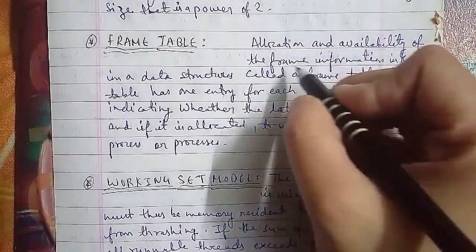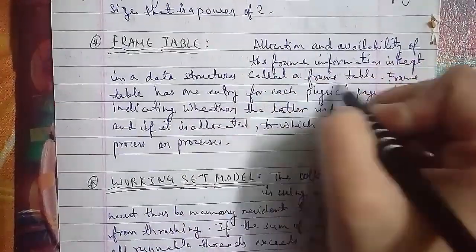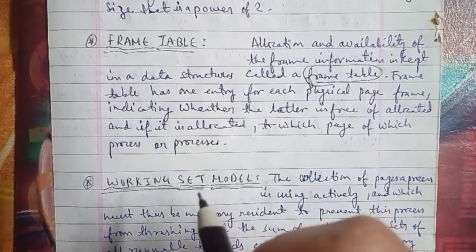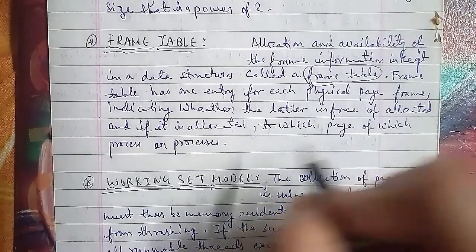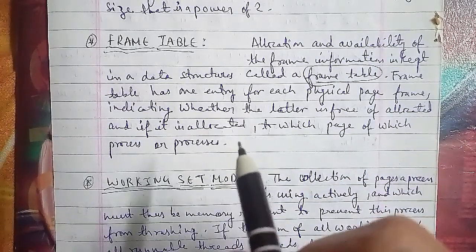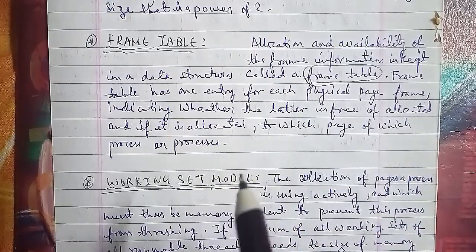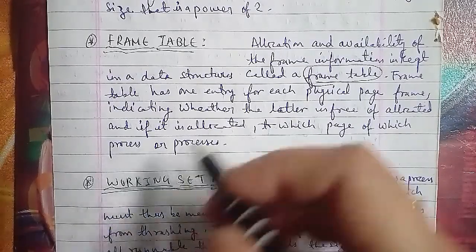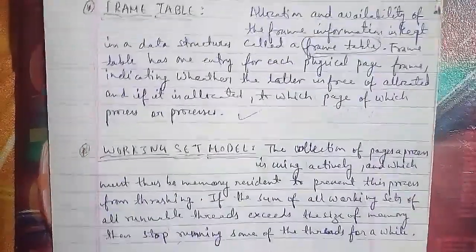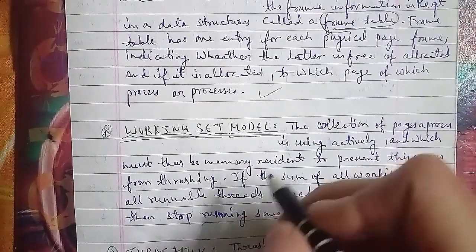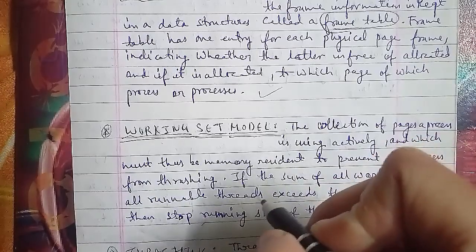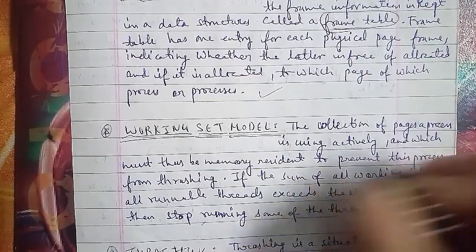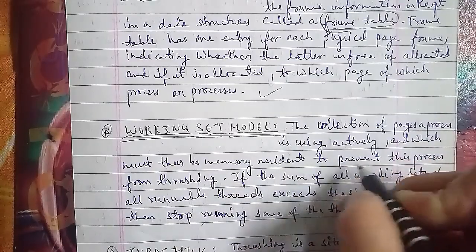Working set model: the collection of pages a process is actively using, which must be memory-resident to prevent the process from thrashing. If the sum of all working sets of all runnable threads exceeds the size of memory, then stop running some of the threads for a while. This is the working set model.